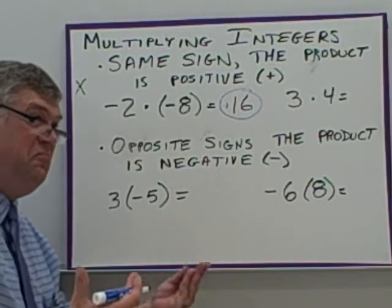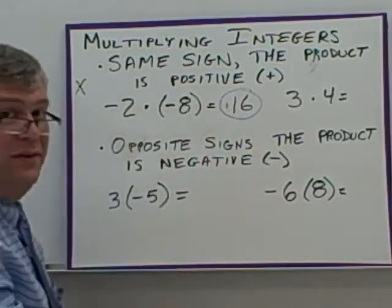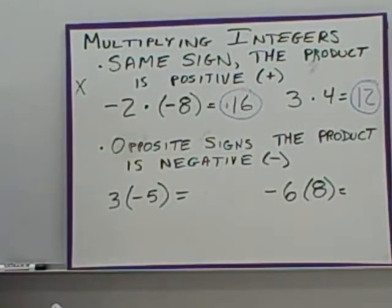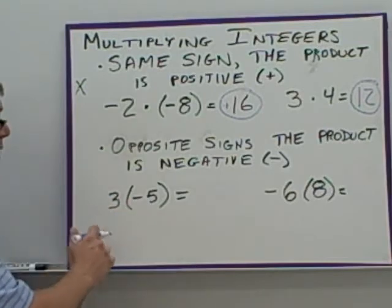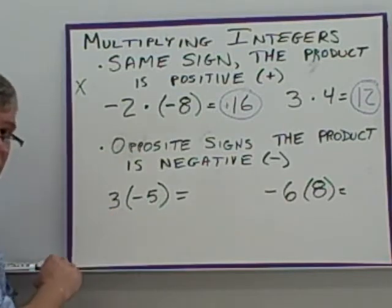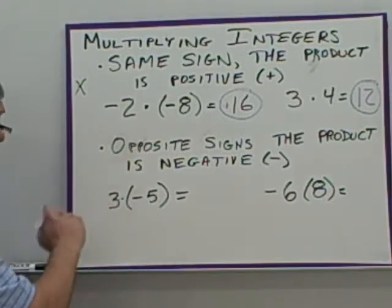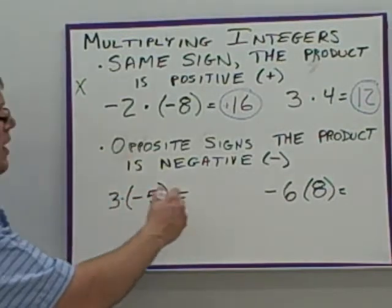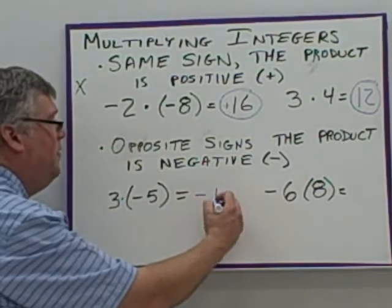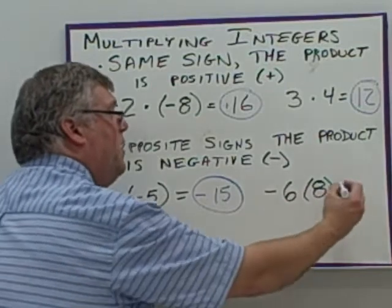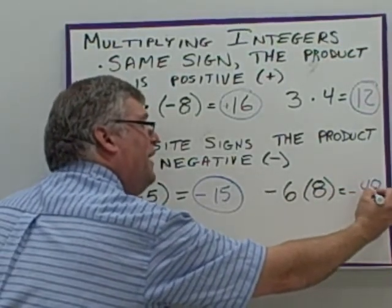Do I have to write the plus sign? No — it's still a positive number either way. Over here, two positives being multiplied: 3 times 4 is 12. If I have opposite signs, the product is going to be negative. 3 times negative 5 — notice there's no operation symbol between a number and parentheses; it's understood you are multiplying. Positive 3 times negative 5 are opposite signs, so the answer is negative 15. Similarly, negative 6 times positive 8 are opposite signs, so the answer is negative 48. When boxing or circling your answer, make sure you include the sign.